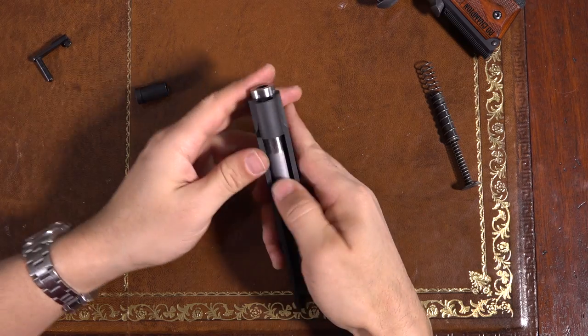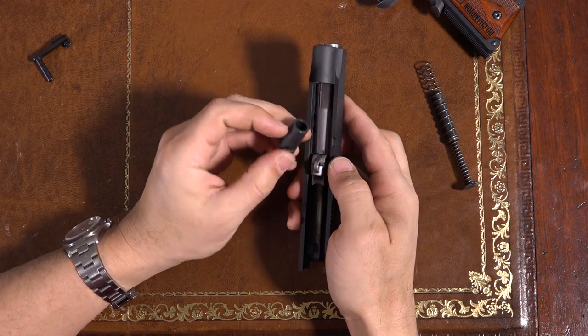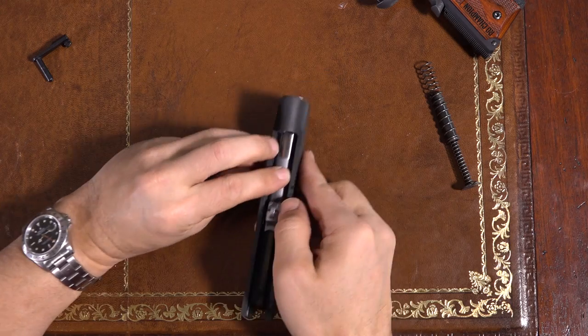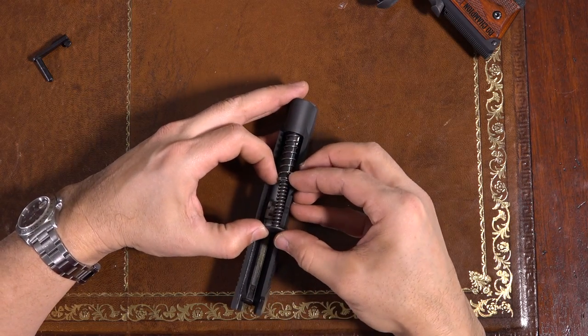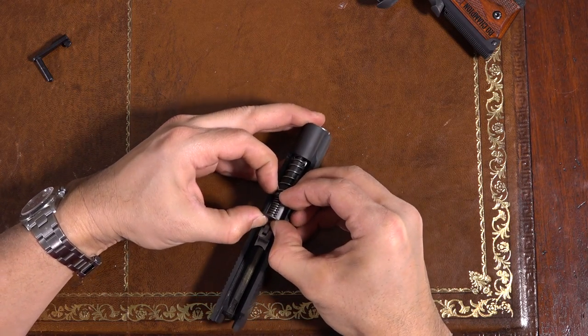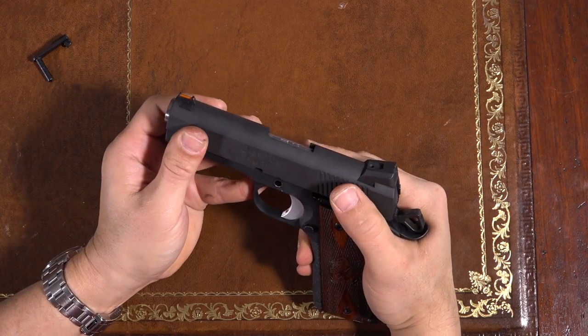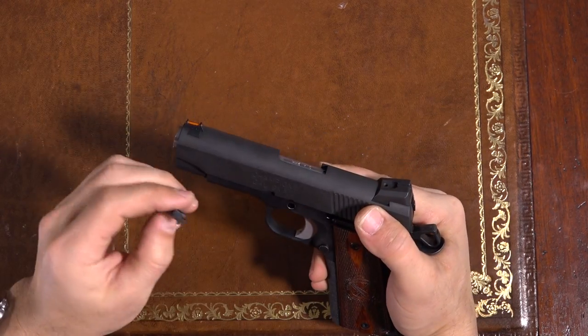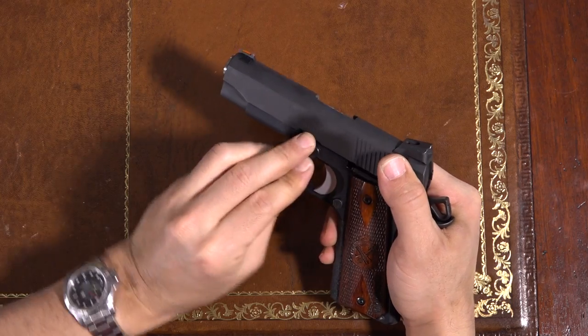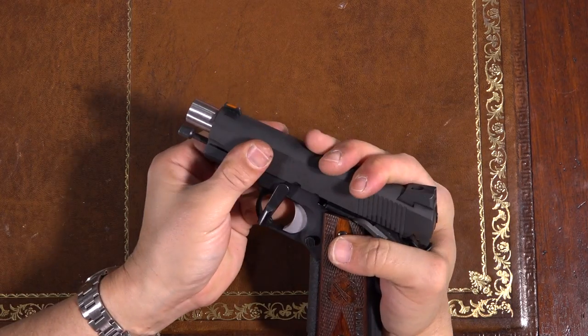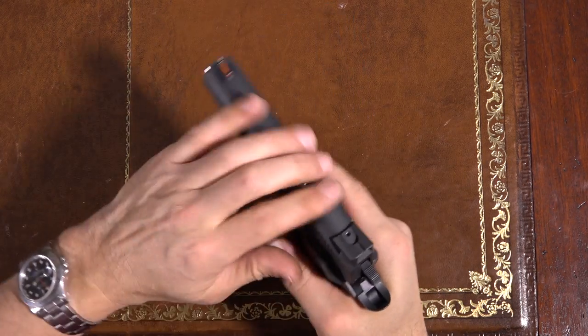Reassembly is just the reverse. Slide the barrel in. If you're not using that plastic catch, it's easiest to keep. Put the spring plug in there first. Insert the end of the spring. And again, just pinch these two parts together as tight as you can. It pops right down on there. Slide this back on. Line up the link with the hole. Drop your slide stop in there. Get this back to the notch. Slide it in. Good to go. Function check.